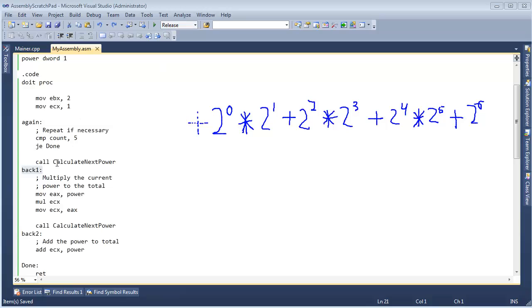Now I notice we have these labels left over, this back 1 and back 2, when we were trying to do the procedures. But we're done with that for now, I think, so let's get rid of that. We solved that problem using the stack.